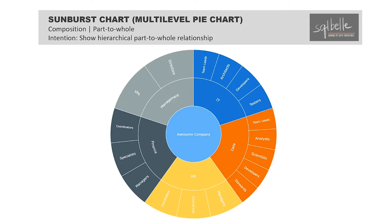A sunburst chart, also called a multi-level pie chart or a radial tree map, is essentially a pie chart with layers. Each ring shows a level in the hierarchy and each ring has its own division. This chart can show high-level hierarchical composition and can make your audience curious, but it can also be hard to read. This chart shares the same benefits and drawbacks of pie charts and tree maps. In many cases, especially when there are too many slices, it is helpful to display this as an interactive chart that allows the audience to drill down and get more details as they need to.